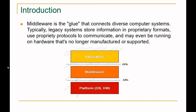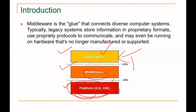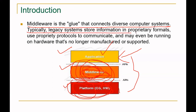Looking at the diagram, you can see three layers: application, middleware, and platform. The platform includes the OS and hardware. The application runs on this platform, and in between the application and the hardware sits middleware. Middleware is the glue that connects diverse computer systems — typically legacy systems that store information in proprietary formats, use proprietary protocols to communicate, and may run on hardware that is no longer manufacturer-supported.